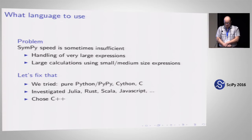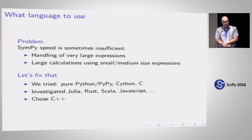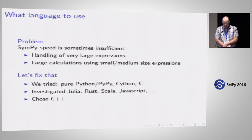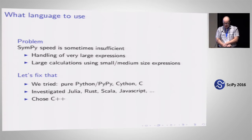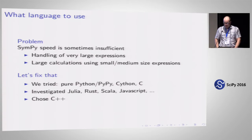We've tried a couple of different approaches in the past to speed this up. We tried pure Python, then PyPy, then Cython. I even wrote a core in C, but the problem with C is that you have to handle memory allocation by hand — it's tough. We also investigated Julia, R, Scala, and JavaScript. Eventually we settled on C++, and I'll talk about that a little bit later.